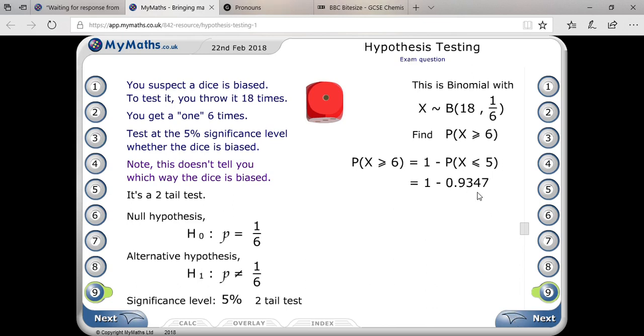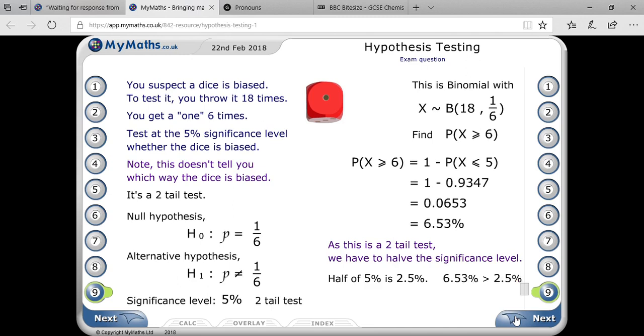By binomial distribution table, you can get probability of less than or equals to five, that is 0.9347. If you subtract that, you'll get 0.0653, that means it is greater than five percent. As this is a two-tail test, we have to half the significance level. That means half of five percent, that is 2.5 percent.